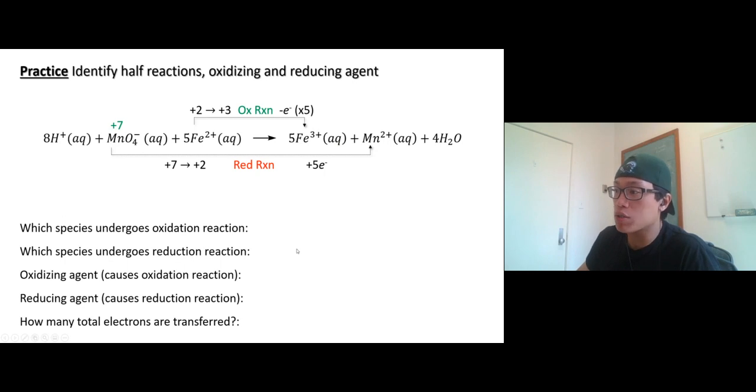Which species undergoes oxidation reaction? Iron two. Which species undergoes reduction reaction? Permanganate, the whole thing, not just manganese. Oxidizing agent: iron two goes through oxidation reaction, permanganate makes that happen. So permanganate is oxidizing iron two. Permanganate is an oxidizing agent. And of course, the other one: iron makes manganese go through reduction reaction. So we call iron a reducing agent.